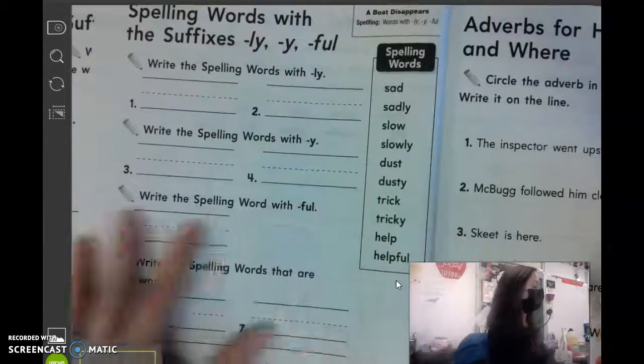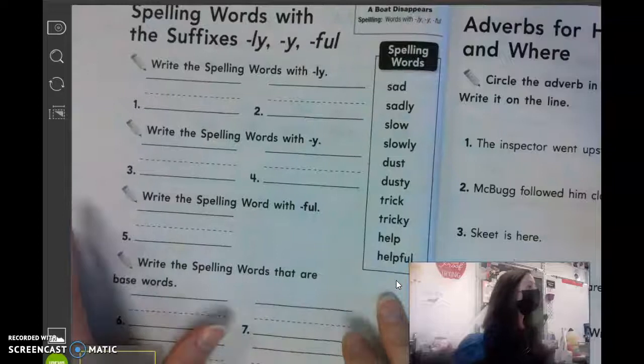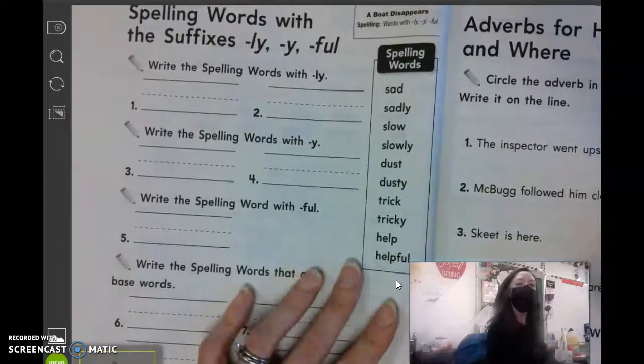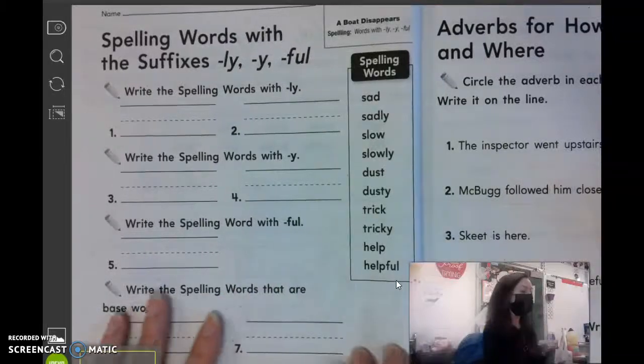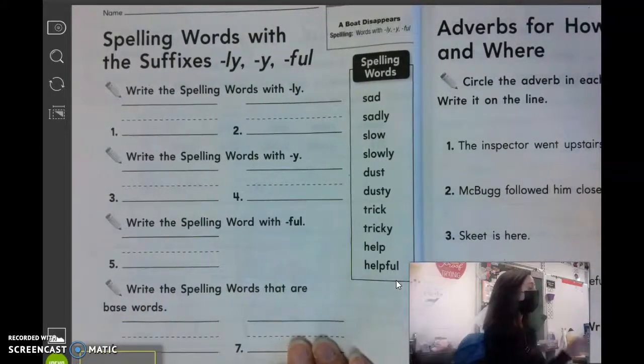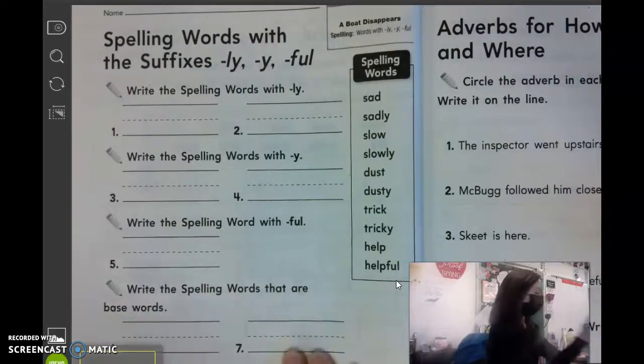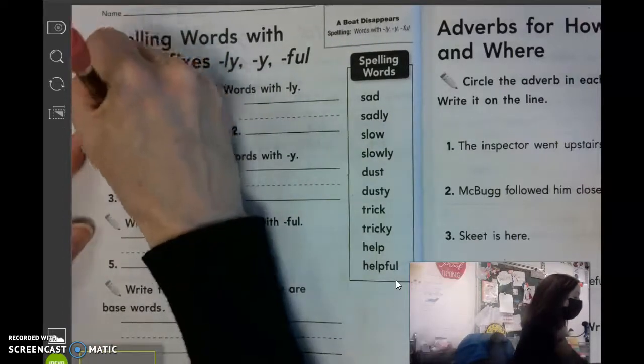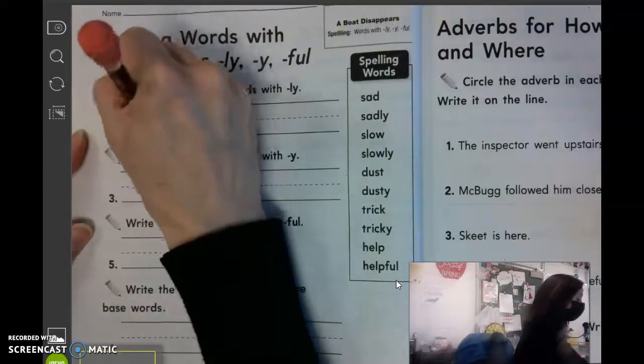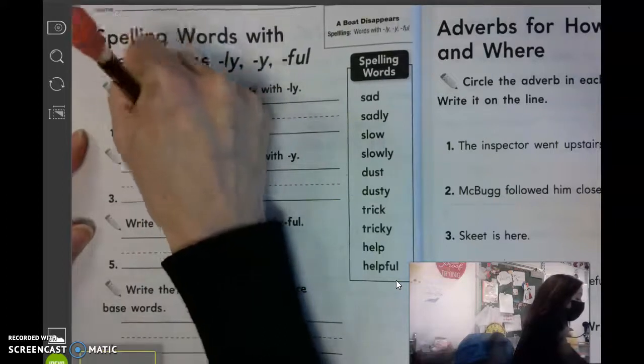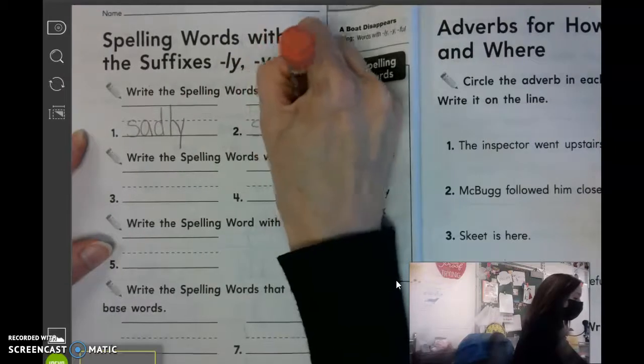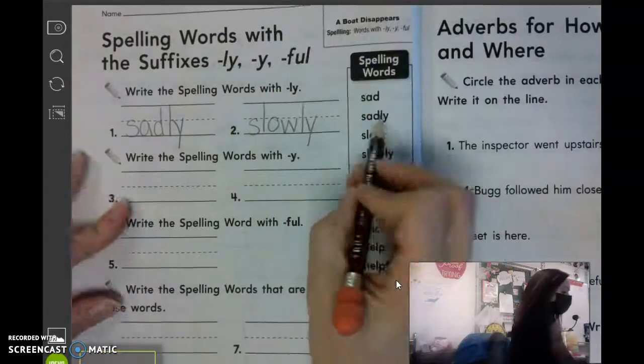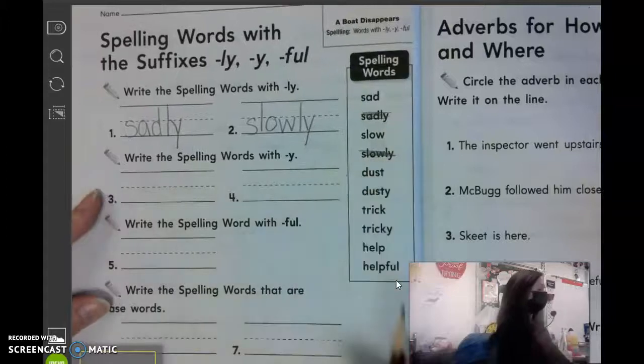All right. On the next page, page 184, it says spelling words with the suffixes L-Y, Y, and F-U-L. Number one and two says to write the spelling words with L-Y. What two spelling words have L-Y? Parker? Good. What's the other one? Slowly. Sadly and slowly. Good. So you can cross those two out.